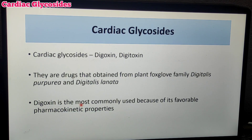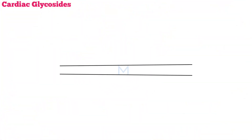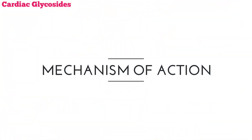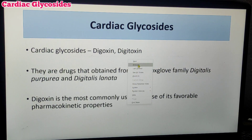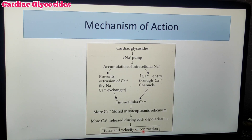These two drugs are called Cardiotonic because their action is primarily on the cardiac region. Next, the mechanism of action — what do Cardiac Glycosides do? They increase the force of contraction and the velocity of contraction, increasing the heart's pumping capacity.